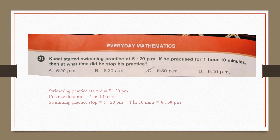Now we are in the Everyday Mathematics section. Question number 21: Kunal started swimming practice at 5:20 pm. If he practiced for 1 hour 10 minutes, at what time did he stop? He started at 5:20 pm and the duration is 1 hour 10 minutes, so we add that to the start time. 5:20 plus 1 hour 10 minutes is 6:30 pm. Our answer is option C.